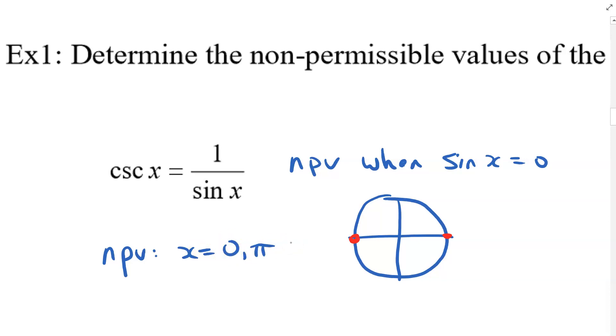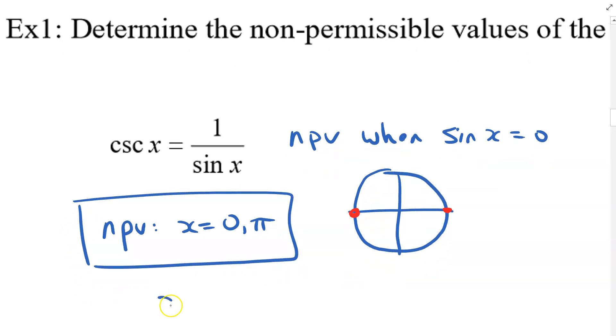And I think it'd be fair to say, let's just do from zero up to two pi. And another way you could write your answer, another way you could say is that x cannot be equal to zero or pi.